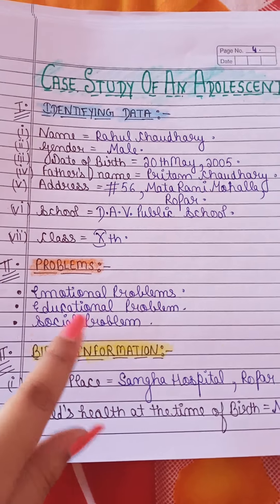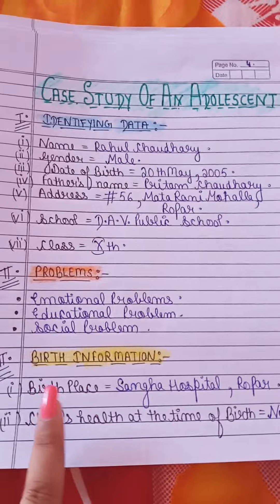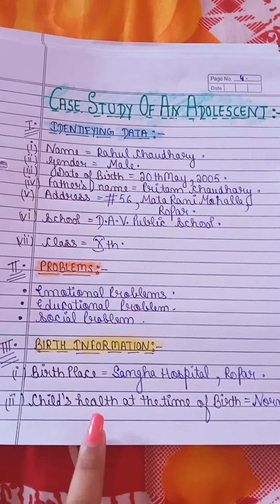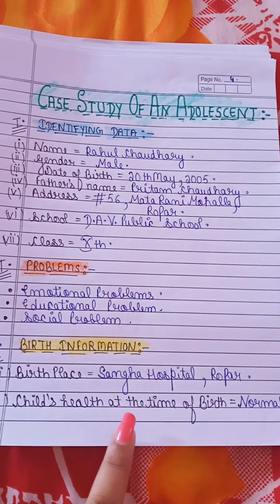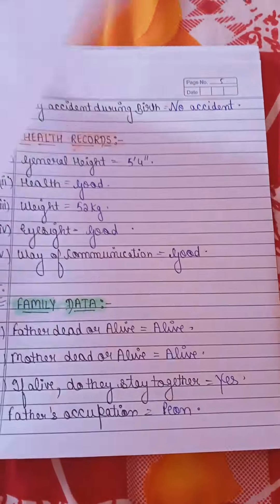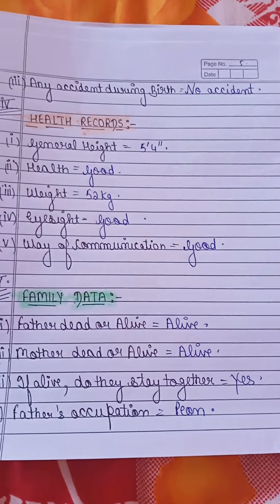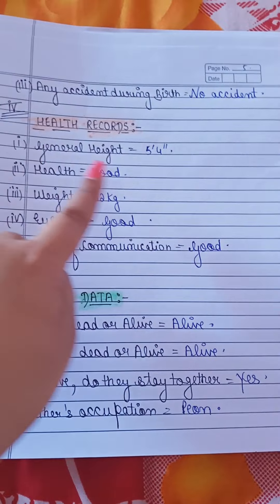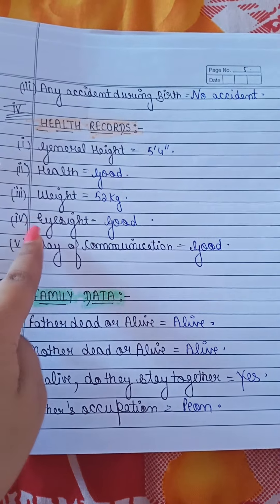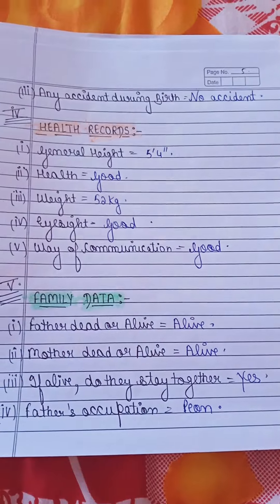Then, the problem — what is actually the problem? The child has an emotional problem, an education problem, and also a social problem. After that, birth information: what is the birthplace, what is the child's health at the time of birth — this is the data you will collect from records. After that, health records: what is the height, weight, eyesight, and way of communication.